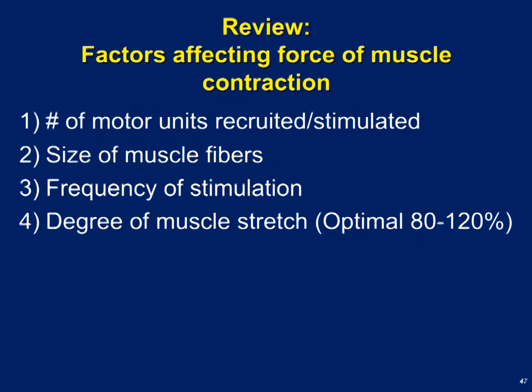The strength of muscle contraction is determined by at least four factors. First, the number of motor units recruited: if we just need a small contraction to pick up a pencil, only a few motor units are activated controlling a small number of cells. For a larger contraction, we recruit more motor units. Second, the size of the fibers: larger fibers are stronger but have less control, so we initially recruit motor units controlling small fibers, then activate those controlling a large number of large diameter fibers as needed. Third, the frequency of stimulation: wave summation means that repeated nervous stimulation gives a stronger and longer contraction — the closer together the nerve impulses, the stronger the contraction.